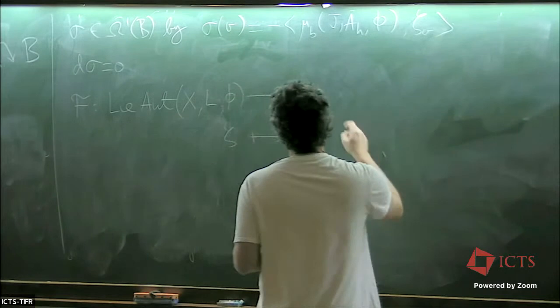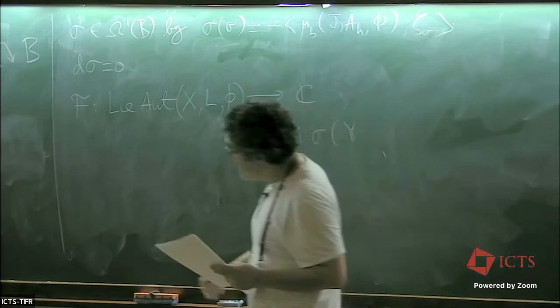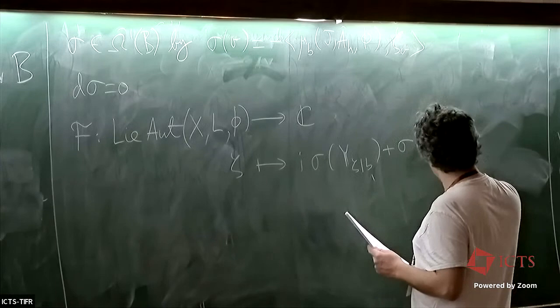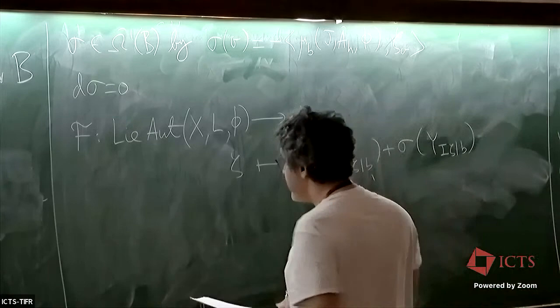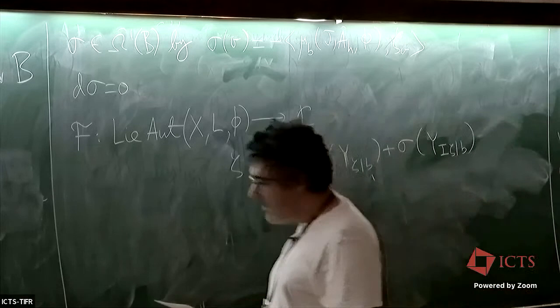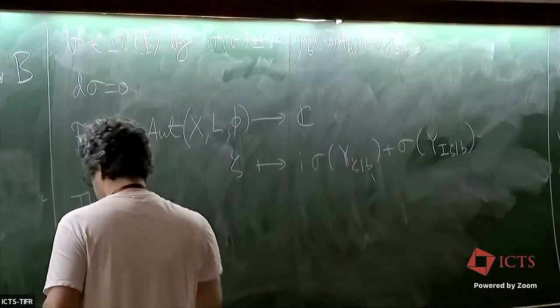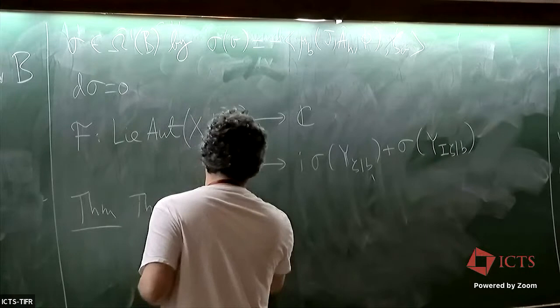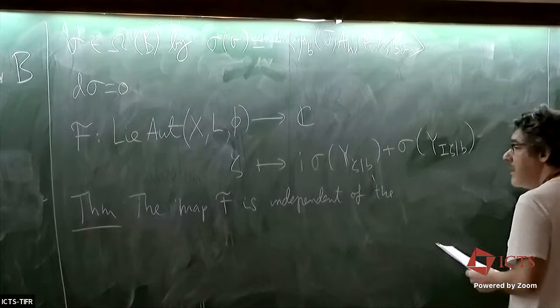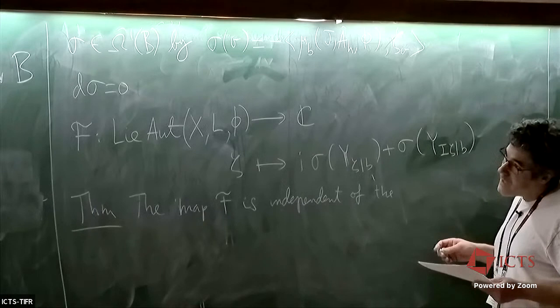So AH is the Chern connection, and it happens it's closed, and so one can now define the Futaki invariant. Okay. It's a character of the Lie algebra of infinitesimal automorphisms of the line bundle and Higgs field. So this is a one-form. Remember, Y is the infinitesimal action. Okay.